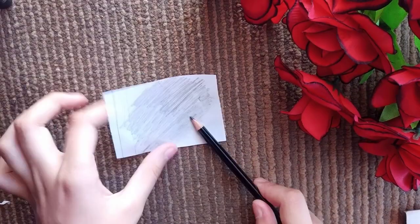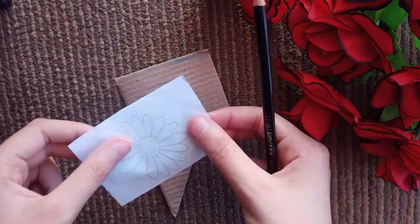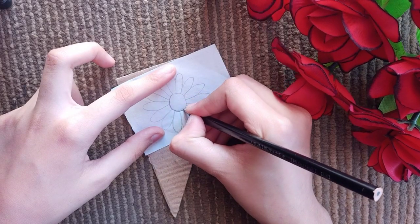Moving ahead, in the second DIY I'm going to make a daffodil pencil topper. So I've drawn a daffodil on a paper and now I'm tracing it on a cardboard.